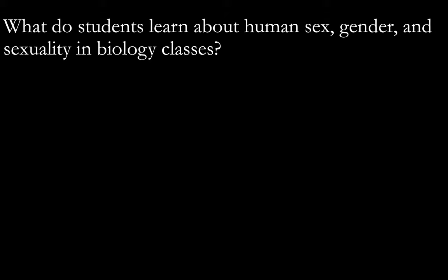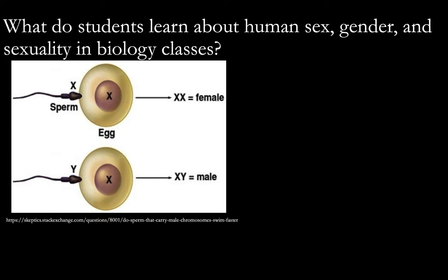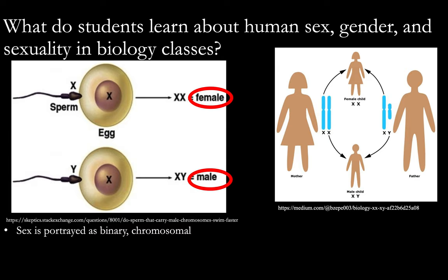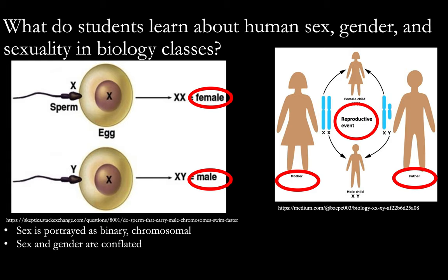So I want to ask: what do students learn about human sex, gender, and sexuality in their biology classes? Frequently in introductory biology classes, human biological sex is shown as purely chromosomal, binary, and fixed at conception. Human reproduction is shown as an event between two individuals with different karyotypes described with culturally gendered terms, conflating sex and gender together. And the only type of human relationship shown is a heterosexual, reproductively focused relationship, which through its exclusive inclusion in biology textbooks is given biological status, whereas other types of human reproductive events and relationships are not shown.